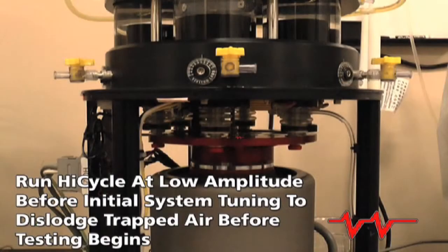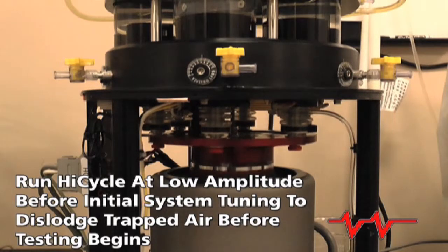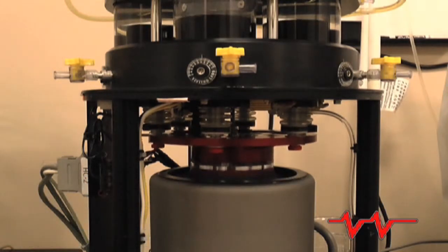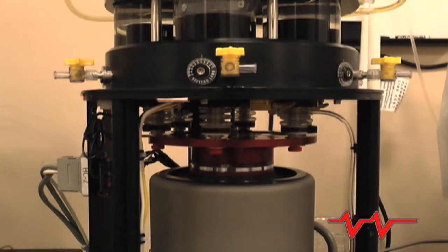When first filling the HiCycle chambers with test fluid and fixing devices to the pistons, air can get trapped in small pockets. It is important to run the HiCycle at low amplitude before tuning the system to dislodge any trapped air bubbles before testing begins.